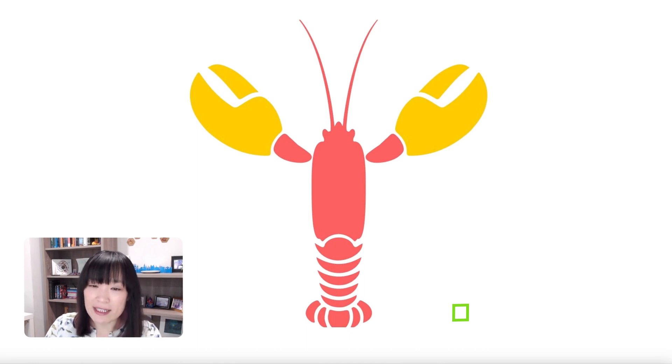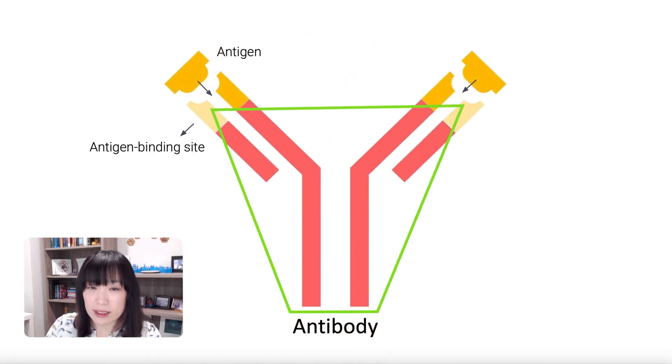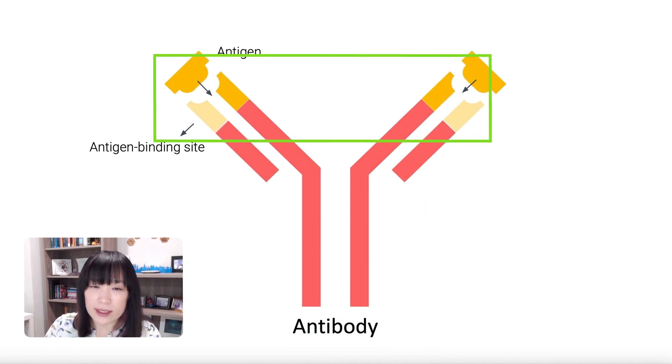So from a high level, an antibody has kind of a body, as you can see in the middle, and then two claws, one on the left and one on the right. And these claws are what are called antigen binding sites. And those are the places where it grabs onto an antigen. So the antigen is just the name of the little piece of protein that the antibody can hold onto.